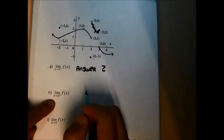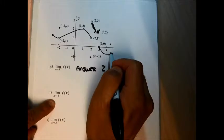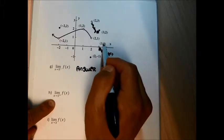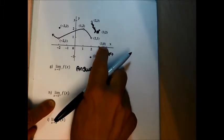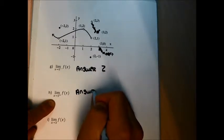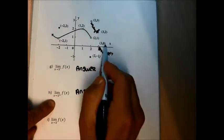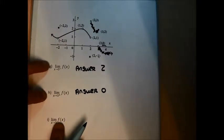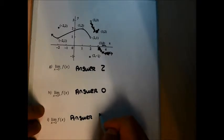For part H, the limit as x approaches 3 from the right: I trace the graph to the right of x = 3, stop just before the point with x-coordinate 3, and the y-coordinate gives the right-hand limit — which is 0. For part I, the two-sided limit: because the left-hand limit (2) and the right-hand limit (0) are different numbers, the two-sided limit does not exist. I'll write DNE for 'does not exist' — that's good enough shorthand.